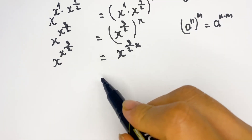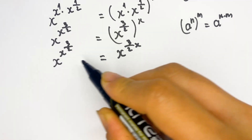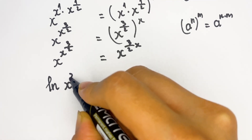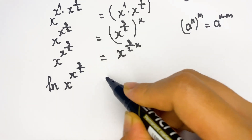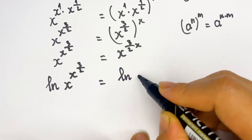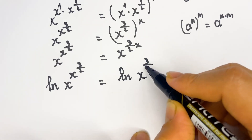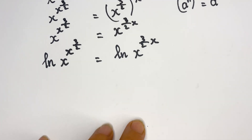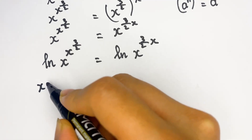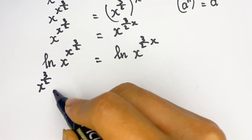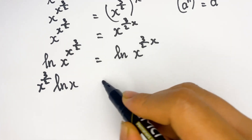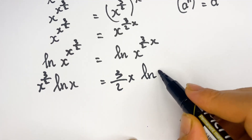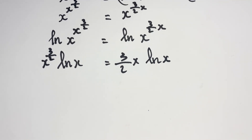Next, we need to take natural logarithms on both sides. Taking ln of x^(x^(3/2)) on the left, we get x^(3/2) · ln(x). On the right, taking ln of x^(3/2 · x) gives us (3/2)·x · ln(x).